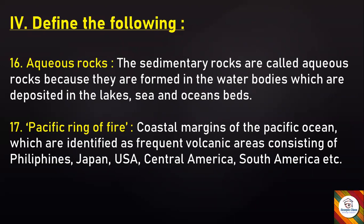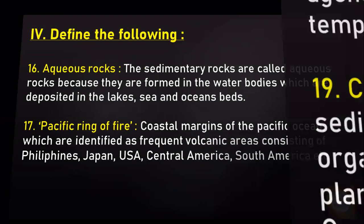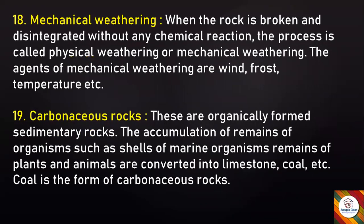Question seventeen — Pacific Ring of Fire: The coastal margins of the Pacific Ocean identified as frequent volcanic areas, consisting of Philippines, Japan, USA, Central America, South America, etc., are called the Pacific Ring of Fire. Question eighteen — Mechanical Weathering: When a rock is broken and disintegrated without any chemical reaction, the process is called physical or mechanical weathering. Its agents are wind, frost, temperature, etc.